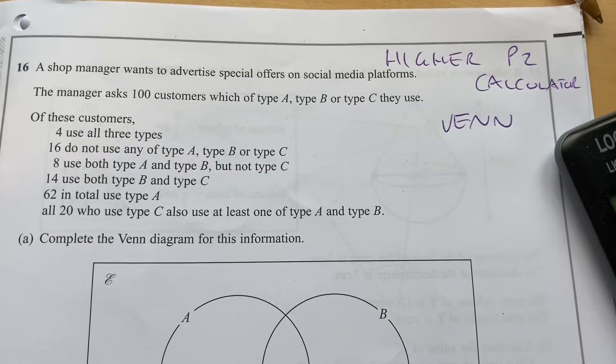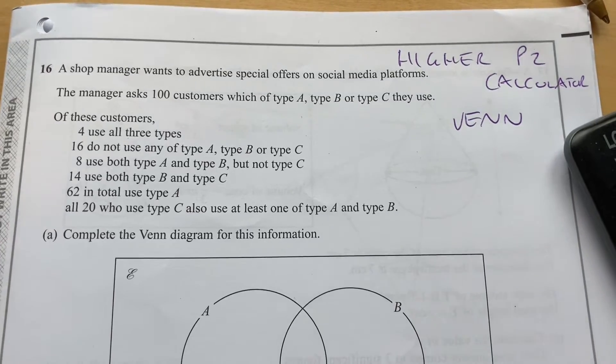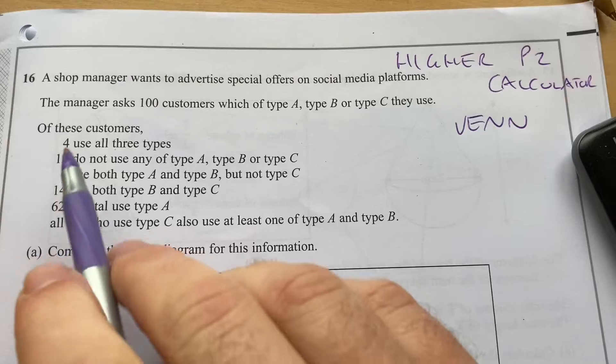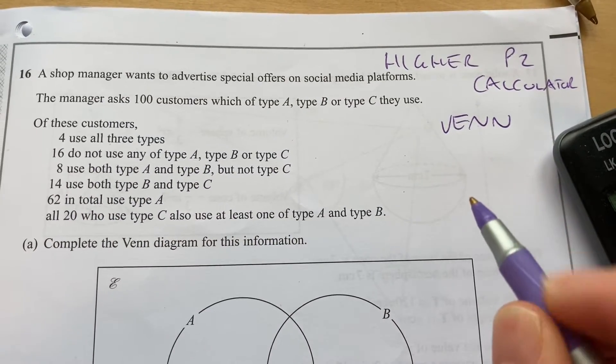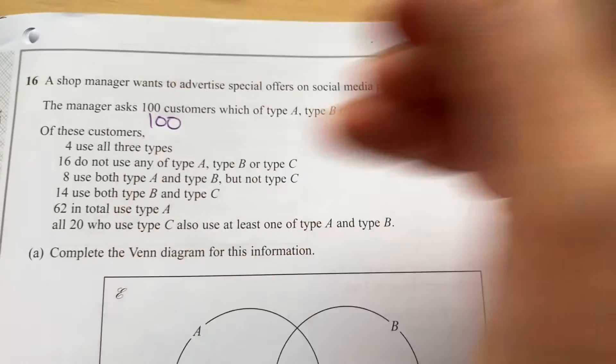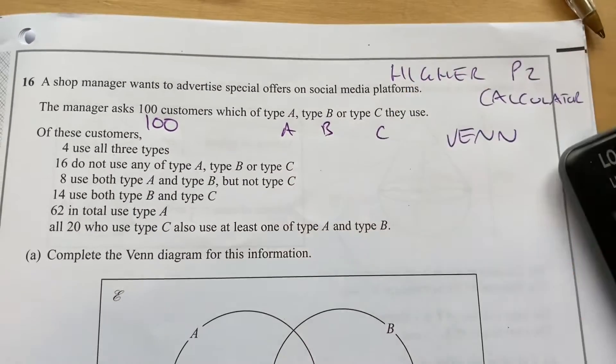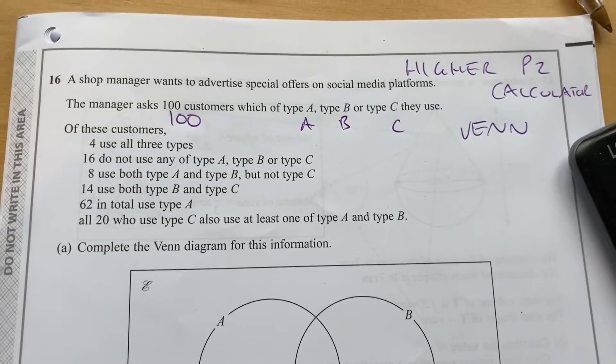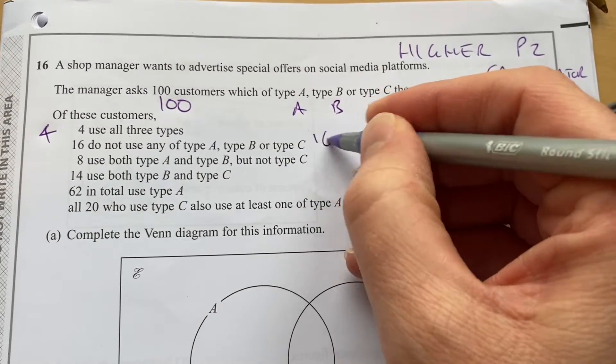Hello and welcome to Martin Maths. We're doing a Maths Higher GCC exam paper here. It's a calculator paper and it's about Venn diagrams. So it says here, a shop manager wants to advertise special offers on social media platforms. He asks 100 customers which of type A, B or C they use. Now it says 4 use all three platforms.